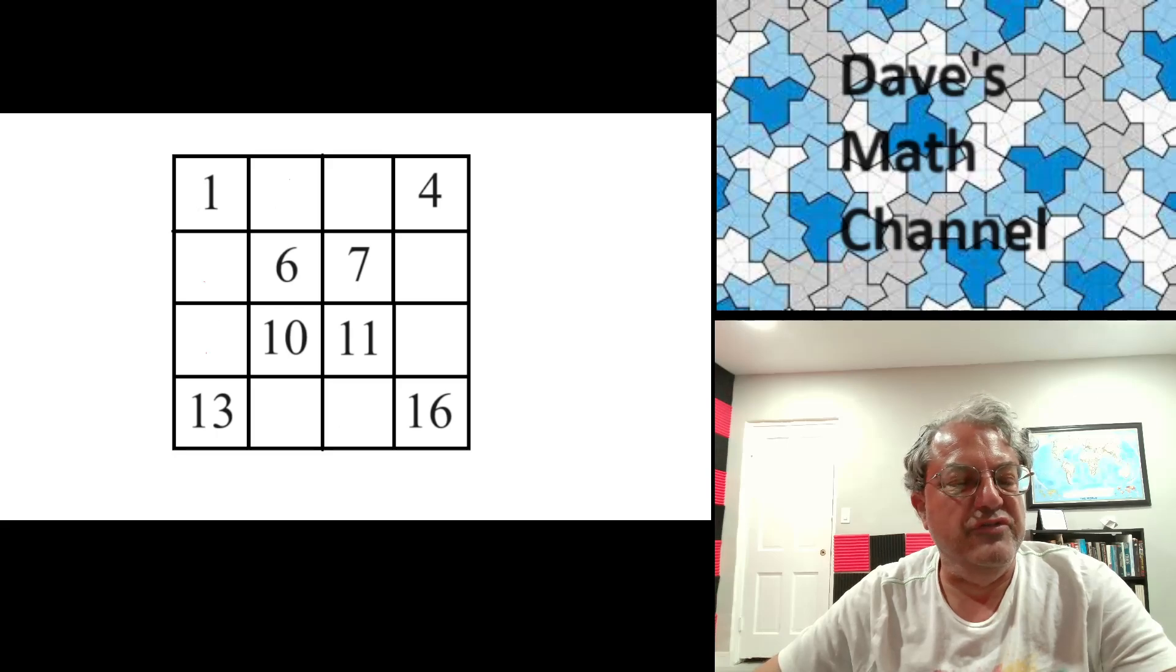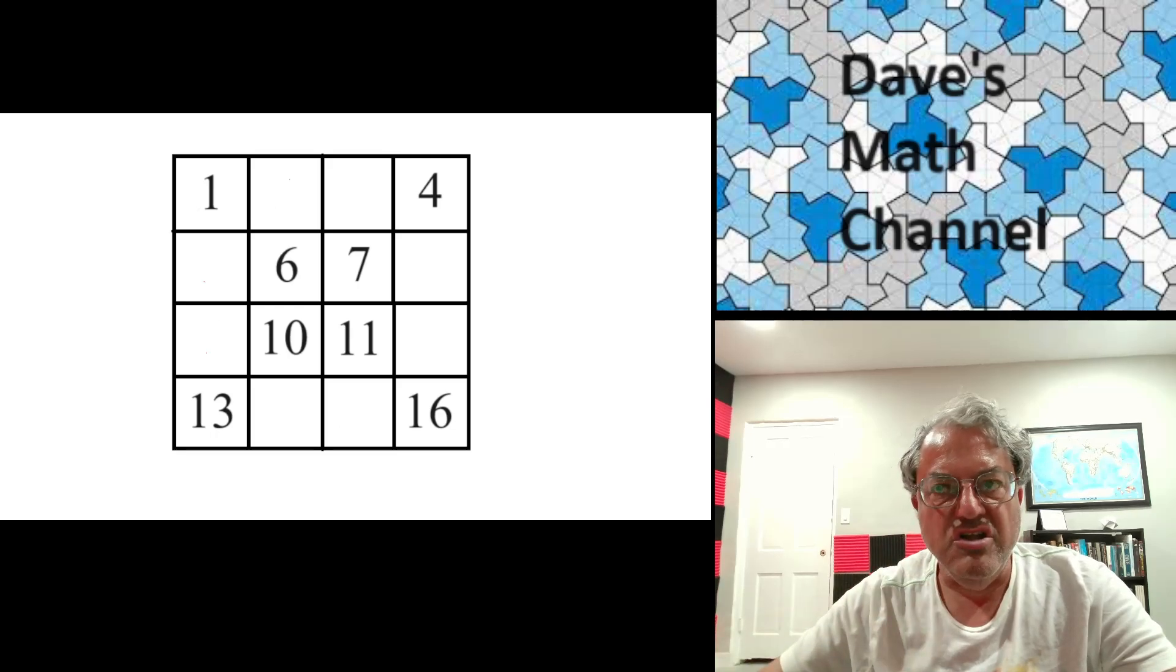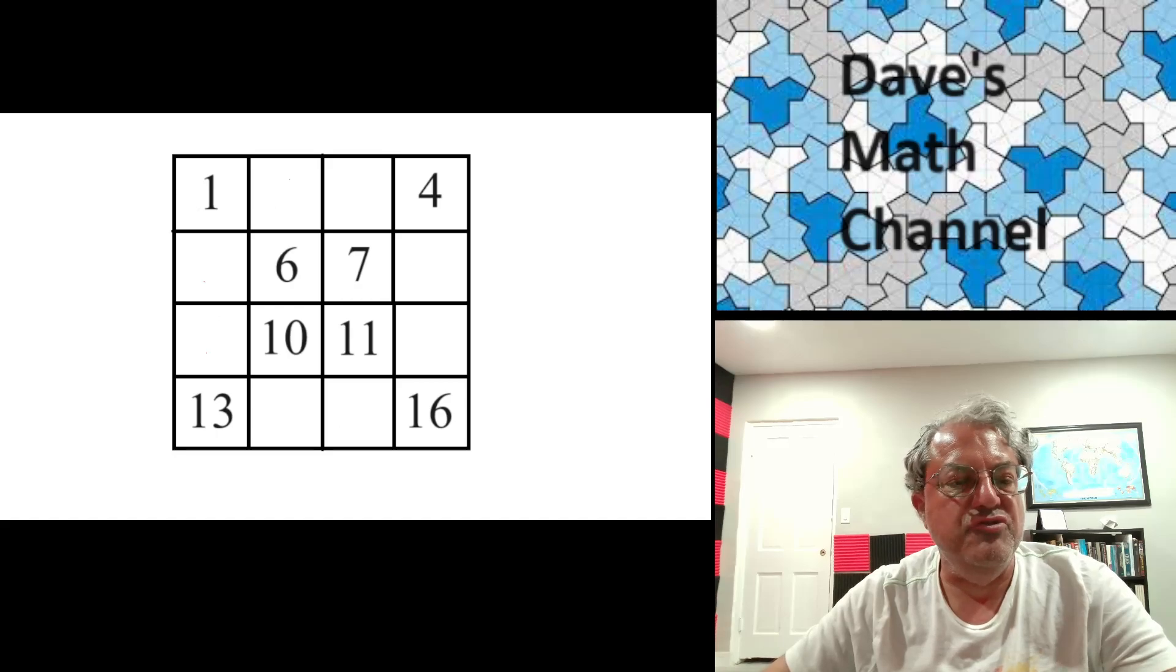How do we fill those in? It's easy. Now all you have to do is count backwards. Go from left to right the way we did when we first wrote the numbers, but now we fill in the missing numbers with the numbers we're counting backwards to.